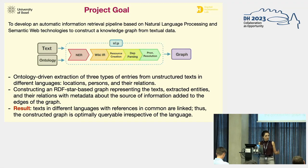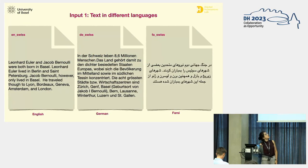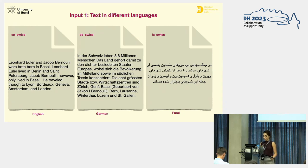The information retrieved from Wikidata for named entities is used to unify resources representing identical entities extracted from text in different languages. The constructed graph contains text in different languages that can be queried for embedded references regardless of the language. For citability and faithful representation of facts, the source document of each extracted fact is added to the edge of the graph as metadata using RDF Star technology. To explain the pipeline, I will use three sample texts in English, German, and Farsi. The same location — for example, the city of Geneva — appears as Geneva in English, Genf in German, and Genf in Persian.